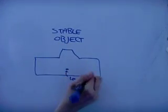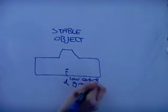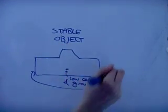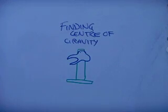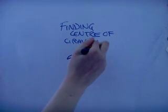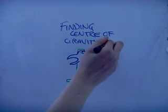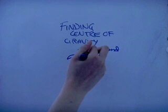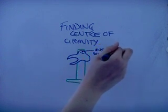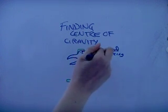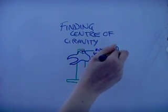A stable object has a low centre of gravity and a wide base. Finding the centre of gravity in an irregular object: step one, suspend the object by piercing it at a point and let it stop moving.